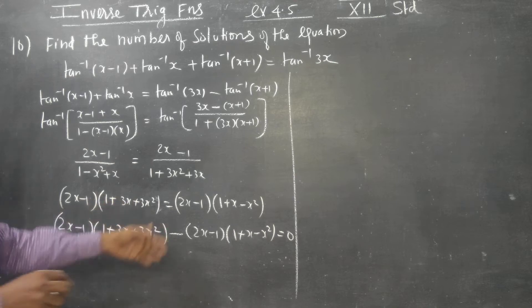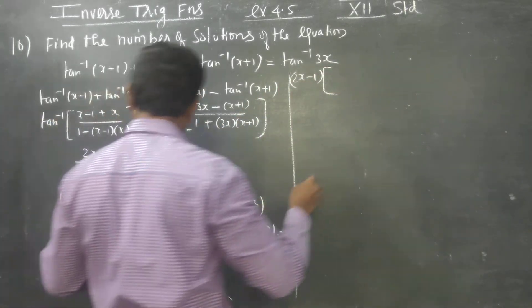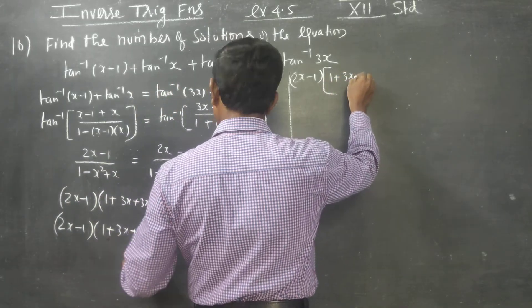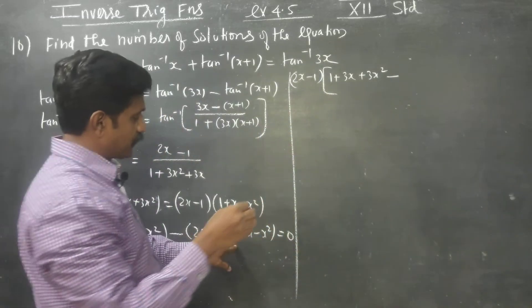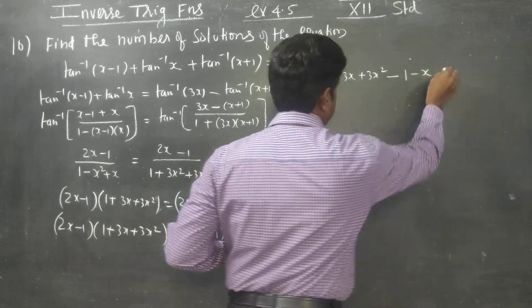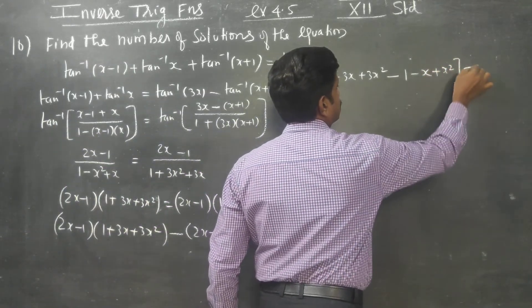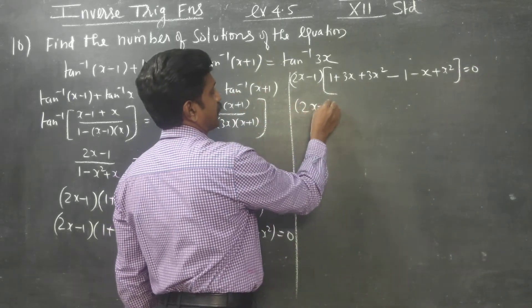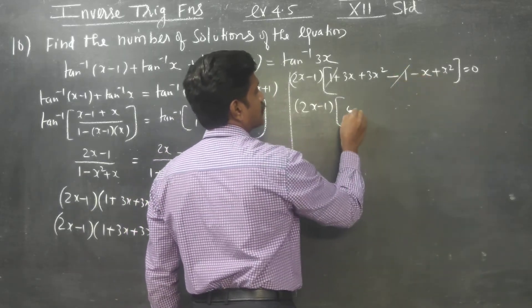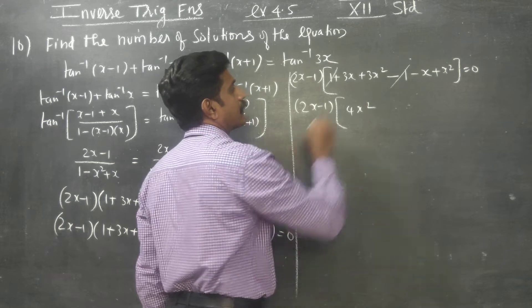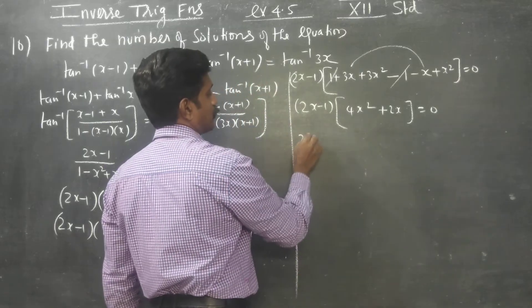Here (2x minus 1) is the common factor. Taking it out, the balance is: (1 plus 3x plus 3x squared) minus (1 minus x plus x squared) equals zero.